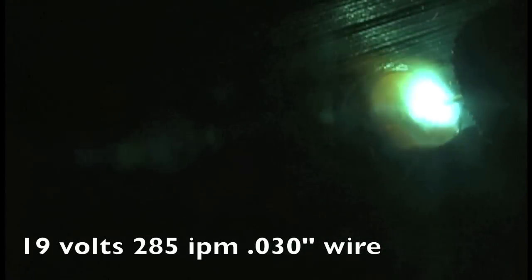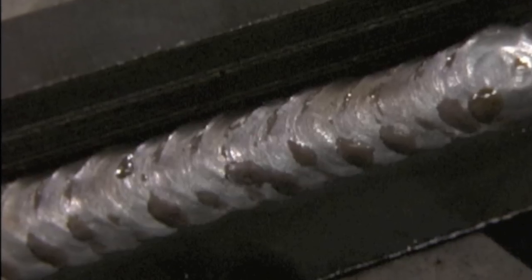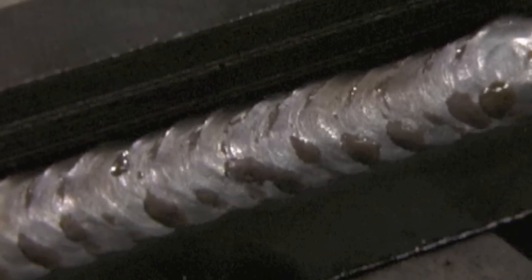If you keep that arc moving back and forth across the front edge of the puddle like this, you will normally get good penetration and good fusion, but it doesn't yield exactly the look that I was looking to have.